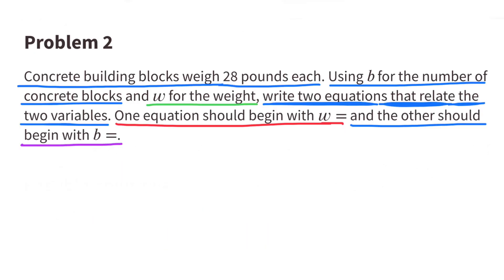Number 2. Concrete building blocks weigh 28 pounds each. Using b for the number of concrete blocks, and w for the weight, write two equations that relate the two variables. One equation should begin with w equals, and the other should begin with b equals.